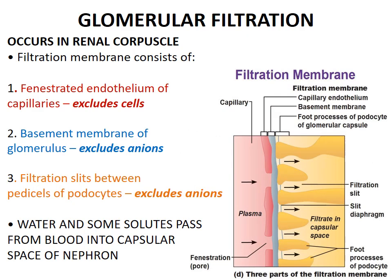Glomerular filtration occurs in the renal corpuscle. The filtration membrane consists of fenestrated endothelium — having small pore-like spaces that exclude cells. This fenestrated endothelium is different from the continuous endothelium seen in other capillaries. The glomerular capillaries have small gaps or fenestrations through which filtrate passes.